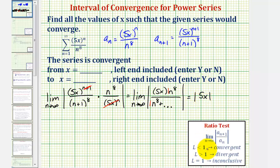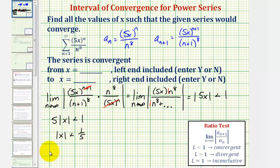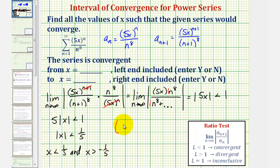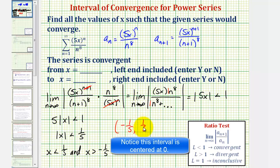This will converge when the absolute value of five x is less than one. Solving this absolute value inequality gives us the open interval of convergence. Factoring out five: five times the absolute value of x is less than one. Dividing both sides by five: the absolute value of x is less than one-fifth. Here, one-fifth is called the radius of convergence. Continuing to solve: x is less than one-fifth and x is greater than negative one-fifth. So the open interval of convergence is from negative one-fifth to positive one-fifth, but we still need to test the endpoints.